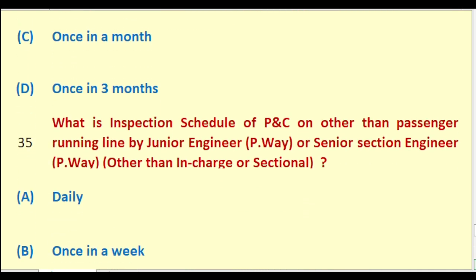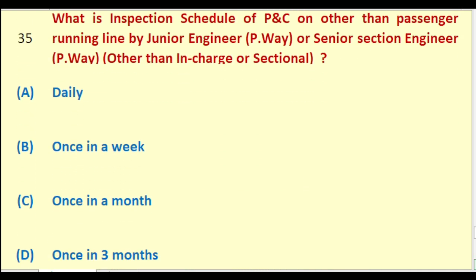What is the inspection schedule of PNC on other than passenger running line by Junior Engineer Permanent Way other than in charge or sectional? Options: daily; once in a week; once in a month; once in three months. The right answer is: once in three months.